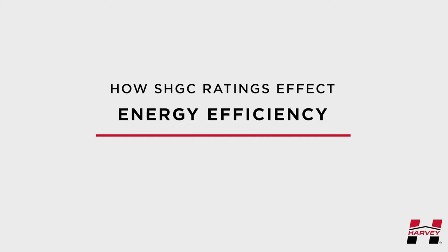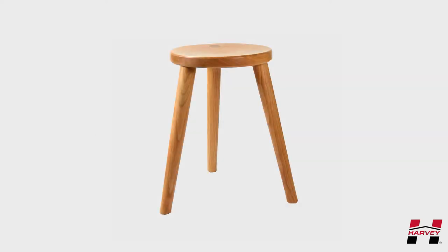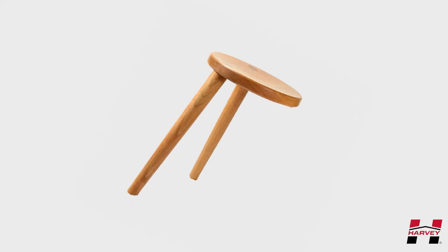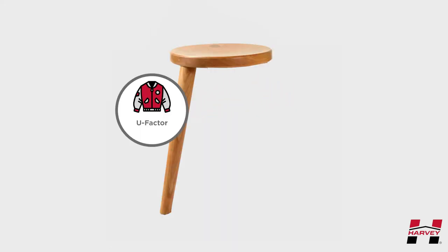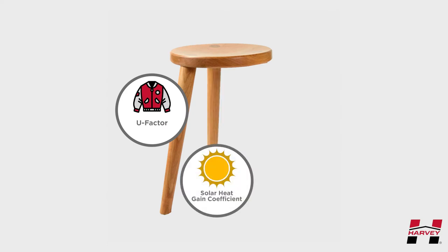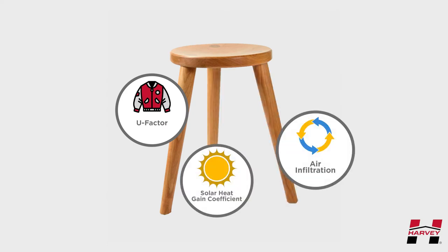Energy efficiency is like a three-legged stool where each leg has a purpose. If you lose one leg, the stool topples over. The three legs of energy efficiency include U-factor, solar heat gain coefficient, and air infiltration.